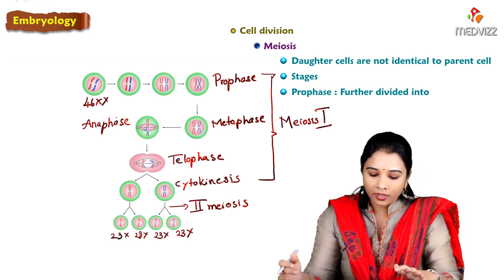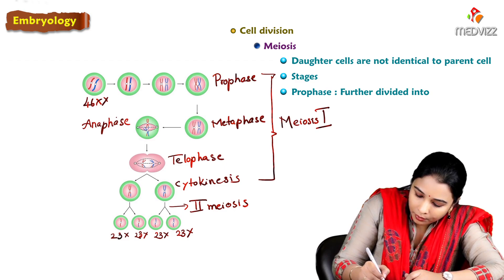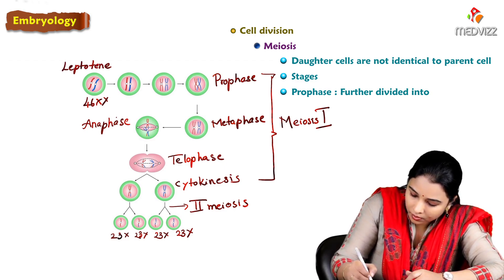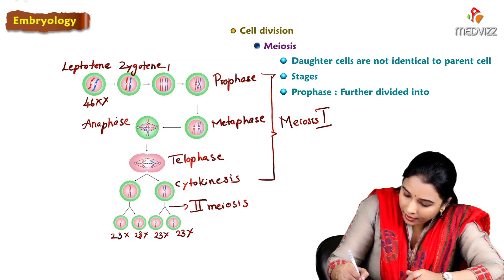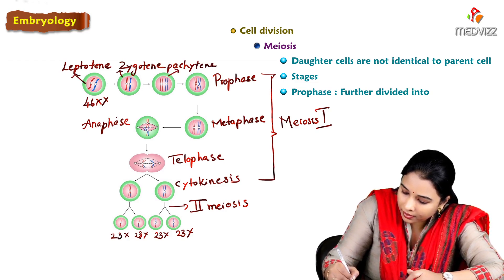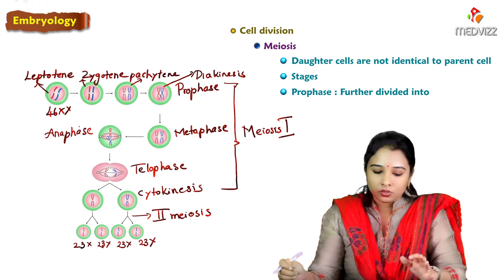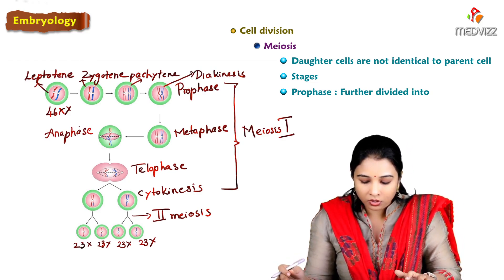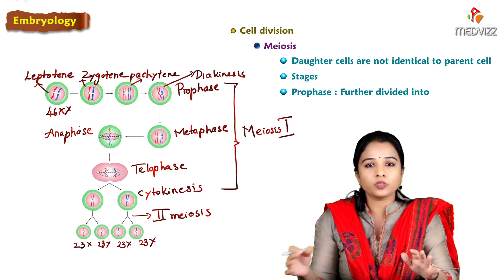In meiosis, prophase I is quite prolonged because it is further divided into substages: leptotene, zygotene, pachytene, diplotene, and diakinesis. Meiosis consists of meiosis 1 and meiosis 2 in sequence.